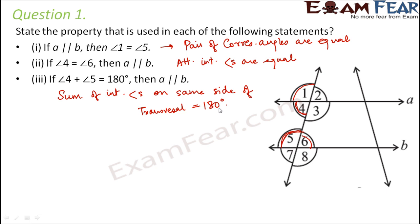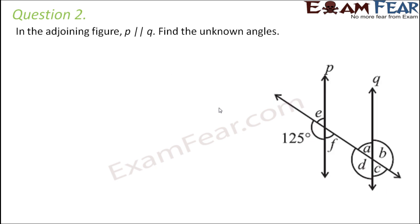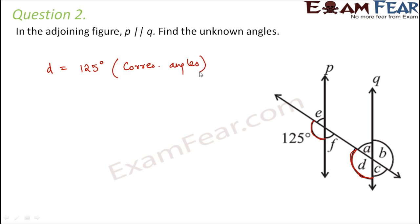So these are the three important properties with regards to a transversal on parallel lines. Question number 2: In the adjoining figure, P is parallel to Q. Find the unknown angles A, B, C, D, E, and F. The corresponding angle to 125 degrees is angle D, therefore the value of D is 125 degrees, because they form a pair of corresponding angles.